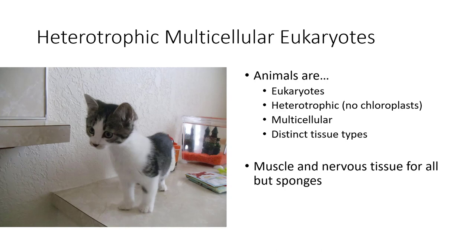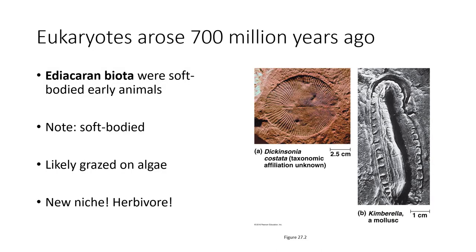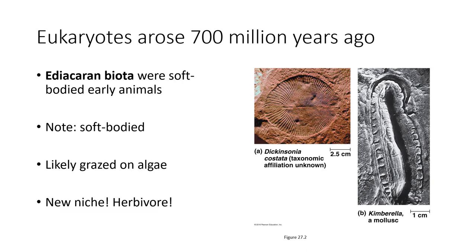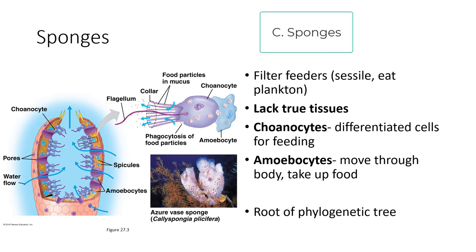Muscle and nervous tissues are found in all animals except sponges. The earliest animals we see are the Ediacaran biota — soft-bodied early animals, so they're not really leaving a lot of fossils, and it's hard to tell what is what. They likely grazed on algae growing on rocks — a new niche as herbivores. The algae had no way of dealing with it except to regrow, so these were pretty successful. Sponges were actually able to filter the open ocean while staying on the rocks, and we still have sponges today. This was quite an innovation — filter feeders were a new niche. They lack true tissues, which keeps them from being what we call a eumetazoan.